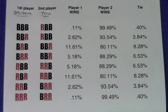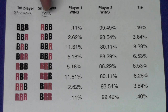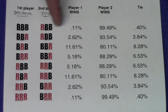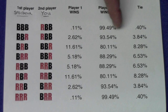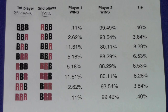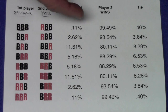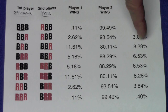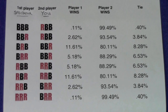Here are the odds of winning if all 52 cards are used — that's why I said to write the predictions down rather than remove cards, because it increases your chances. If the spectator says black black black and you say red black black, you have a 99.49% chance of winning. If the spectator says black black red and you say red black black, you have a 93.54% chance of winning with a 3.84% chance of tying. If the spectator says black red black or red black red, you have an 80.11% chance of winning with an 8.28% chance of tying — so an 88% chance of winning or tying in the worst case. This is an incredible bet. People will think it's fair because they're shuffling the cards and each selecting their own sequence.